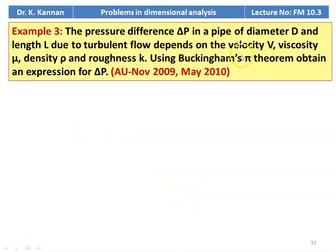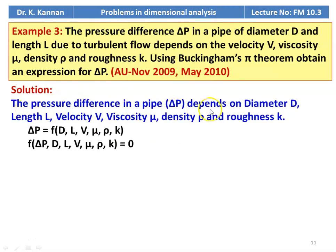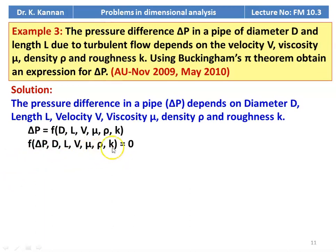Example number 3: The pressure difference ΔP in a pipe of diameter D and length L due to turbulent flow depends on the velocity V, viscosity mu, density rho, and roughness k. Using Buckingham's Pi theorem, obtain an expression for ΔP. This question appeared in November 2009 and May 2010. So ΔP is a function of D, L, V, mu, rho, and k.